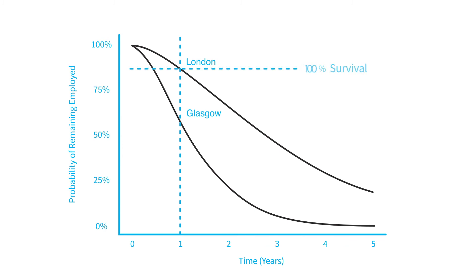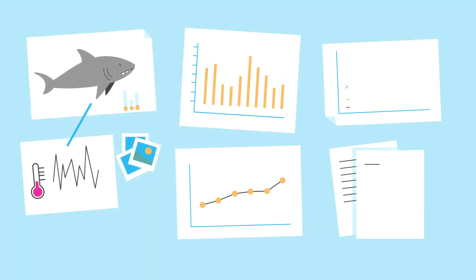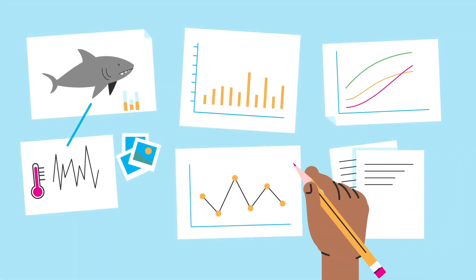Hazard ratios can be used to assess the relative probability between two groups of experiencing an event. Using appropriate statistical models, you can include multiple covariates.